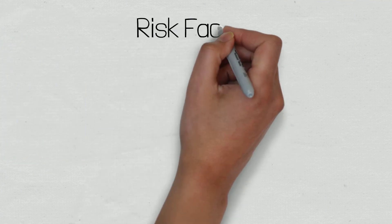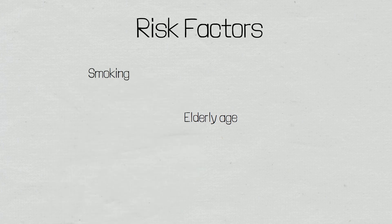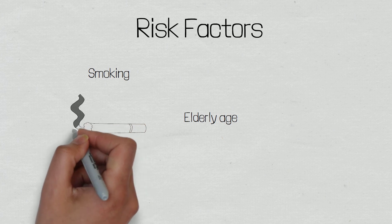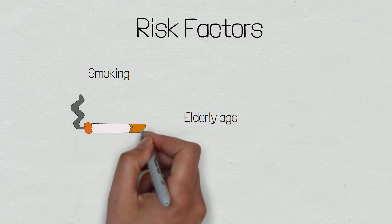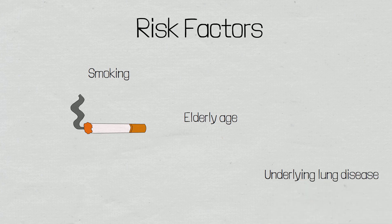There are several modifiable and non-modifiable risk factors that increase a person's chance of developing pneumonia. These include old age, and smoking — as nicotine inhibits ciliary movement within the mucociliary escalator, inhibiting this defence mechanism. Smoking also leads to excess mucus production for pathogens to survive and introduces multiple toxins into the pulmonary system that can inhibit normal immunological responses. Underlying lung disease such as COPD will provide a more hospitable environment for bacteria, with several defence mechanisms destroyed such as the mucociliary escalator.